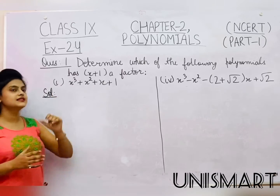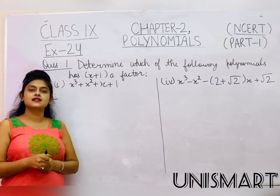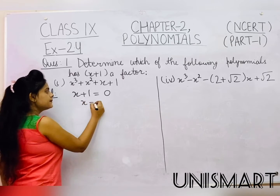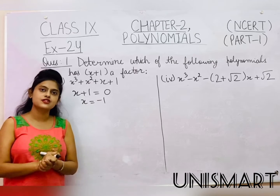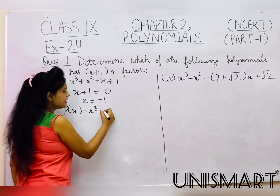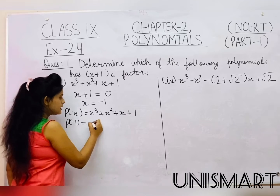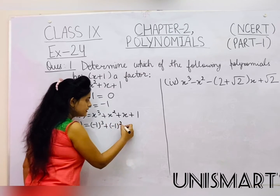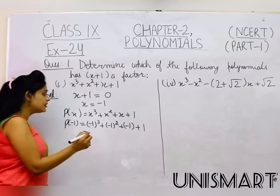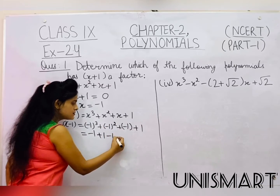Now I am going to determine whether the given polynomial has x+1 as a factor. What we do is set x+1 equal to 0, so x equals minus 1 — because the +1 shifts to become -1. Now we will put this value into the polynomial. Our polynomial is x³+x²+x+1, so we substitute minus 1: (-1)³ + (-1)² + (-1) + 1.